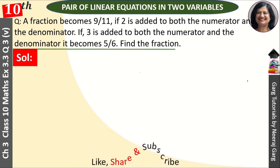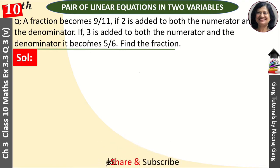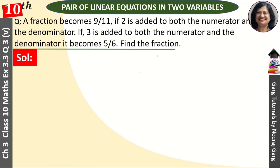A fraction becomes 9 upon 11 if 2 is added to both numerator and denominator. If 3 is added to both the numerator and the denominator it becomes 5 upon 6. Find the fraction.